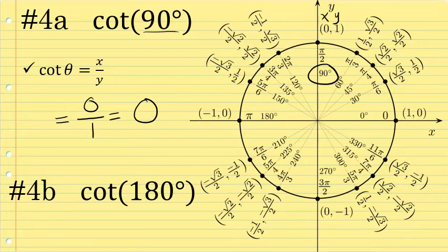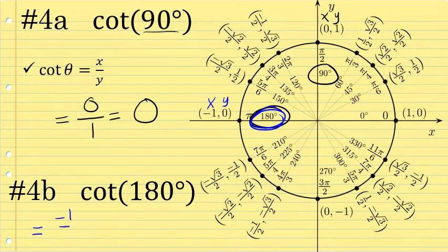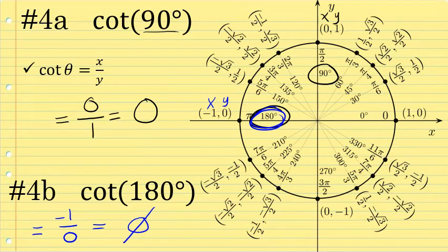Let's next look at the cotangent of 180 degrees. At 180 degrees, the associated x-coordinate is negative one and the associated y-coordinate is zero. So the cotangent of 180 degrees, x over y, would be negative one over zero. A division by zero is undefined, so the cotangent of 180 degrees is undefined — there is no solution.